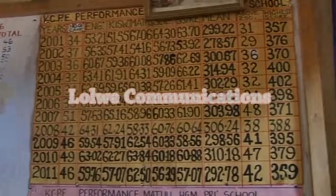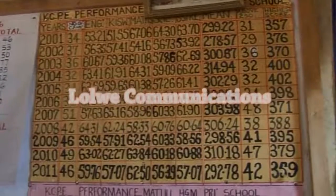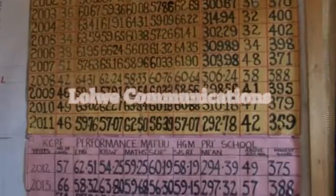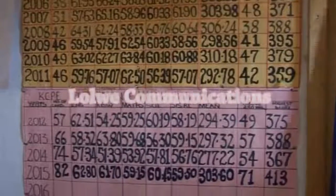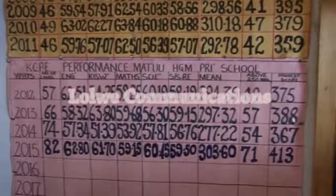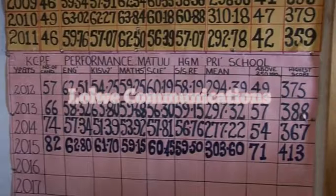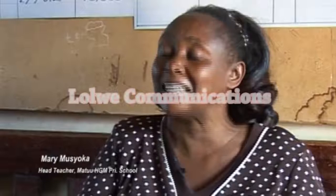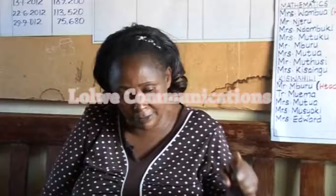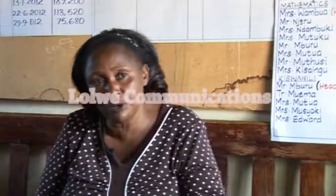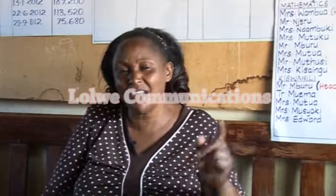The school's enrollment is steadily rising, courtesy of its good performance in national examinations. They had 82 candidates and the mean score went up to 303.60. Seventy-one out of 82 managed above 250, one child managed 413 and is now in Alliance, and around 10 had over 390. The school was rated number one public school in the sub-county. Where there is commitment, there are good results.